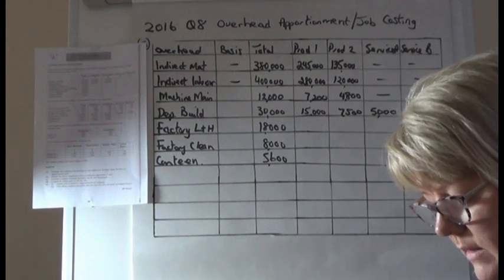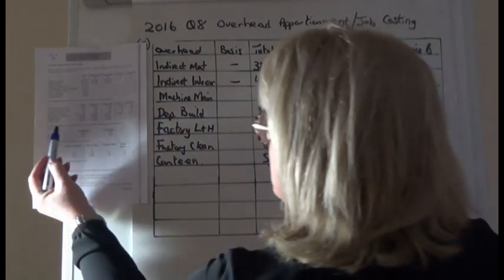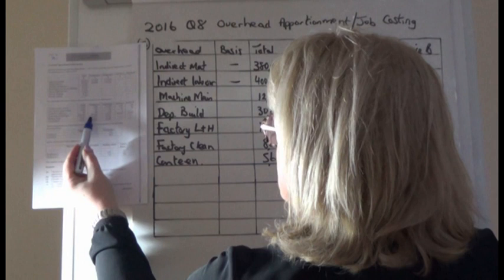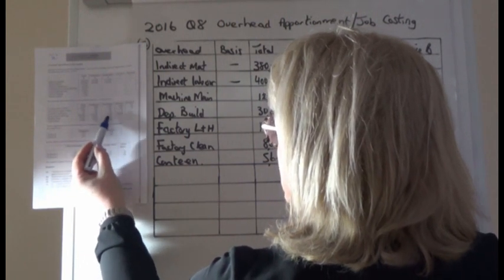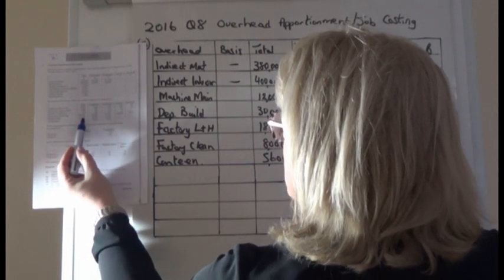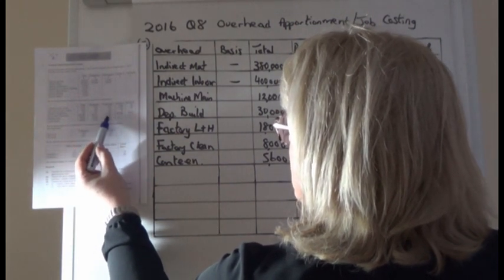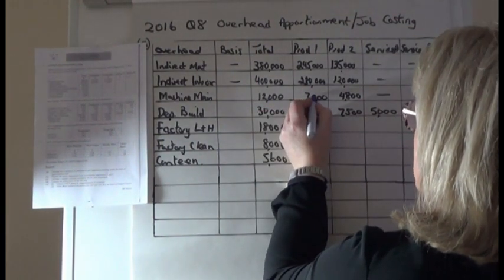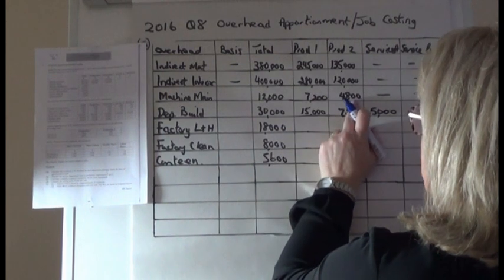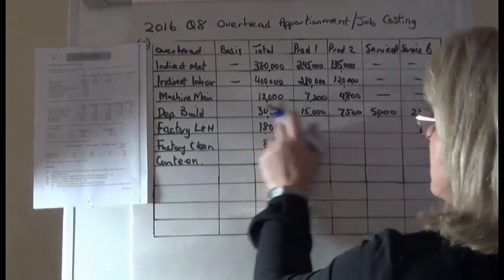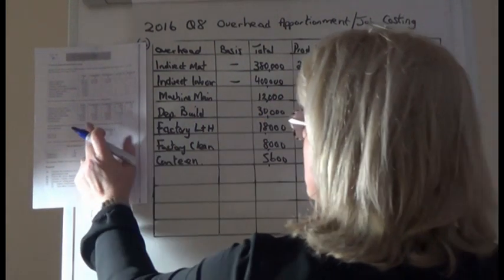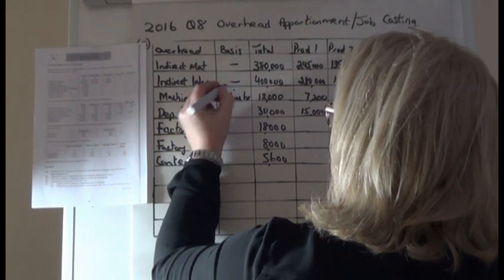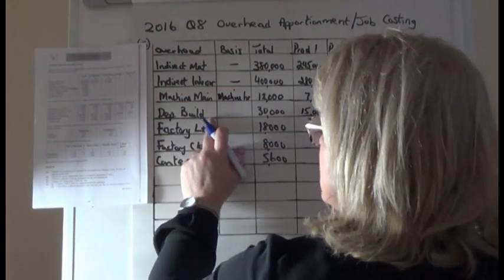Machine maintenance is always split on the basis of machine hours. From the original question, there are 50,000 machine hours in total — 30,000 in Production 1 and 20,000 in Production 2, giving a ratio of three-fifths to two-fifths. So three-fifths of 12,000 is 7,200 and two-fifths is 4,800, with nothing in the service departments. The 12,000 is divided on that same machine hours basis.